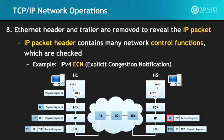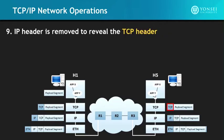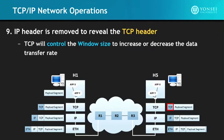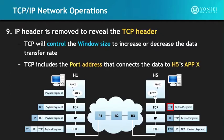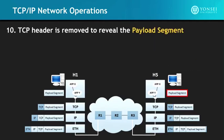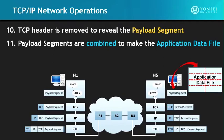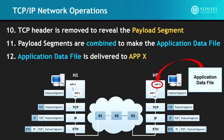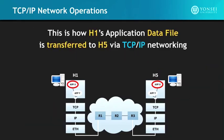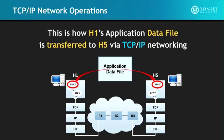The Ethernet header and trailer are removed to reveal the IP packet. The IP packet header contains many network control functions which are checked — for example, the ECN (Explicit Congestion Notification). The IP header is removed to reveal the TCP header. TCP controls the window size to increase or decrease the data transfer rate, and includes the port address that connects the data to H5's Application X. The TCP header is removed to reveal the payload segment, and the payload segments are combined to reconstruct the application data file, which is delivered to Application X.